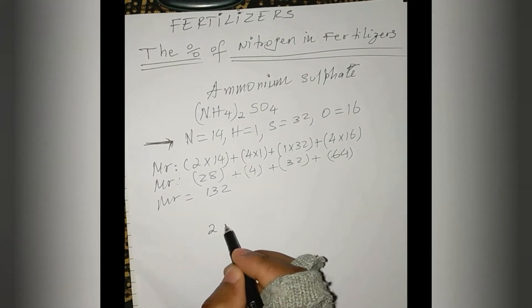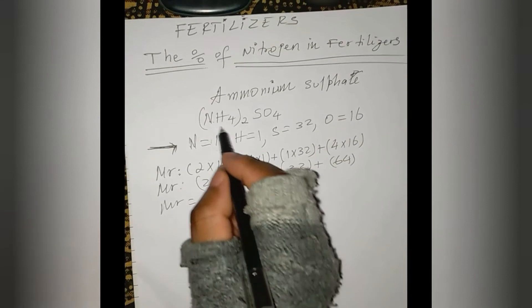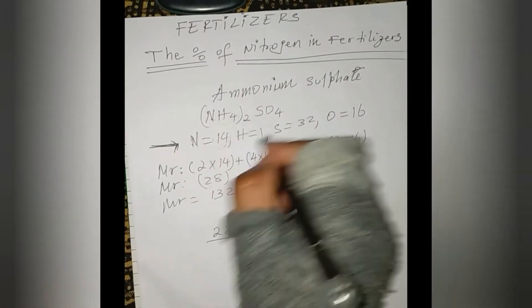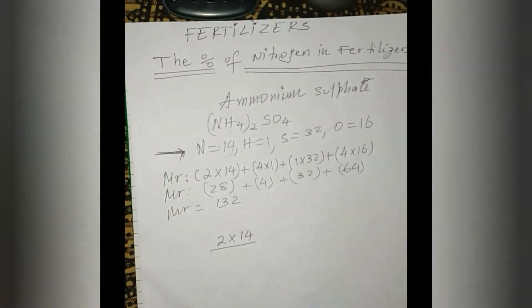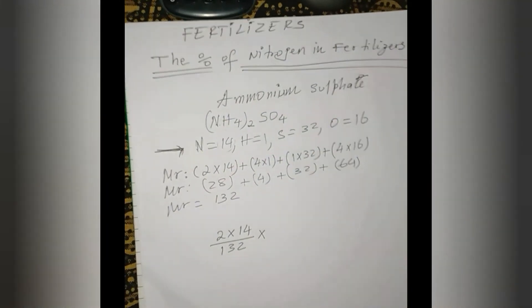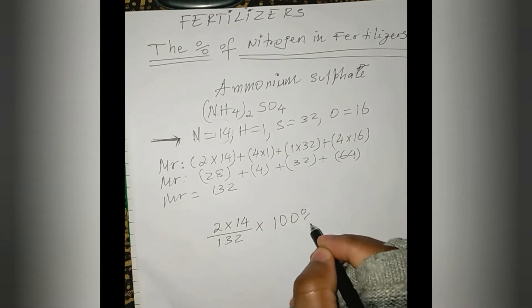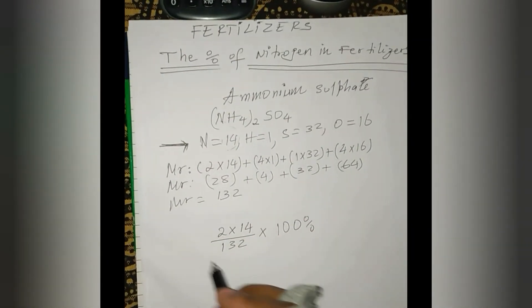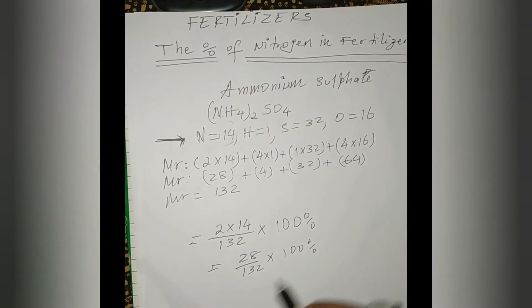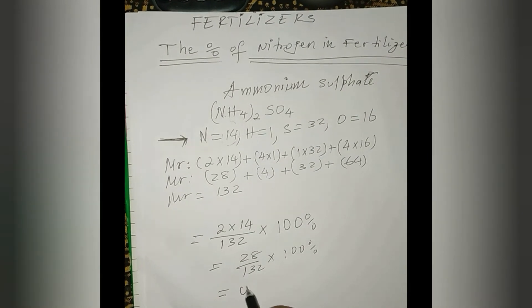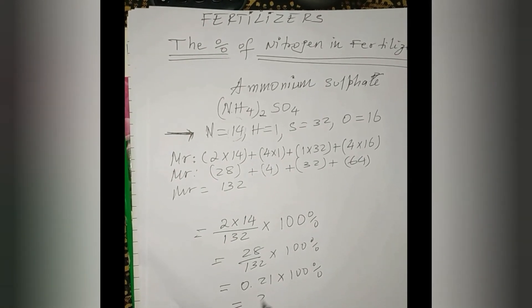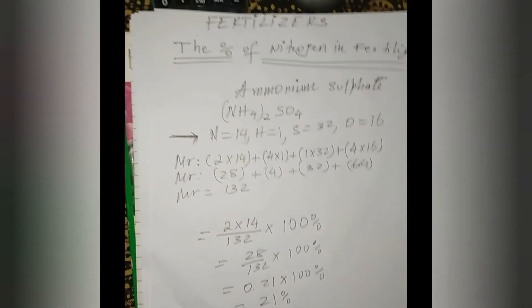So 2 times the mass number of nitrogen, which is 14, divided by the total mass number of the compound, which is 132, times 100 percent. 2×14 is equal to 28 divided by 132 times 100 percent. This will be equal to 28 divided by 132, which is 0.21 times 100 percent. So this will be equal to 21 percent. The percentage of nitrogen in ammonium sulfate is 21 percent.